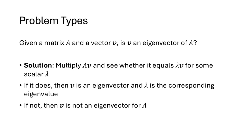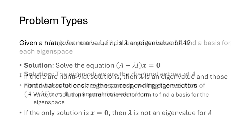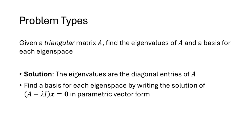Here's a quick summary. If given a matrix and a vector, check whether the vector is an eigenvector by multiplying A times V and checking if the result is a scalar multiple of V — if so, that scalar is the eigenvalue. If given a matrix and a value lambda, test whether lambda is an eigenvalue by solving (A minus lambda I)x equals zero: non-trivial solutions mean lambda is an eigenvalue. For a triangular matrix, we can identify eigenvalues directly from the diagonal entries and find a basis for each eigenspace.